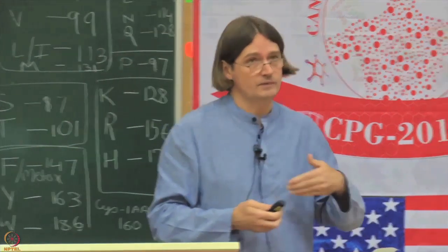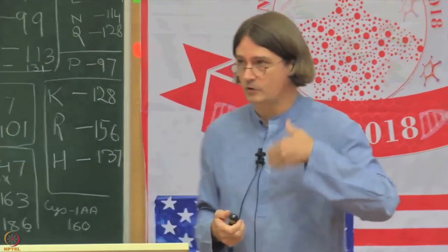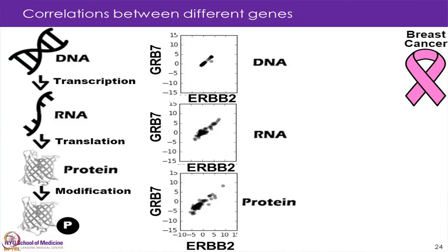Another thing is we can look at correlations between different genes. This is one example — again ERBB2, now comparing it to GRB7 — and we do this both on the DNA, RNA, and protein level. In this case we have a very consistent result: they are highly correlated on all the measurements. The reason why we have the copy number change so highly correlated is that they are very close to each other on the same chromosome.